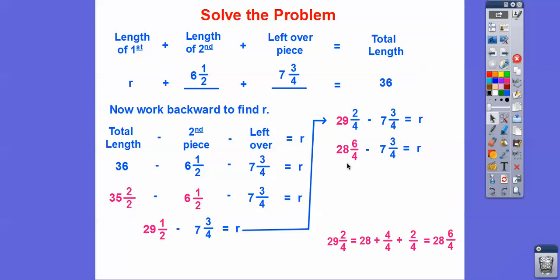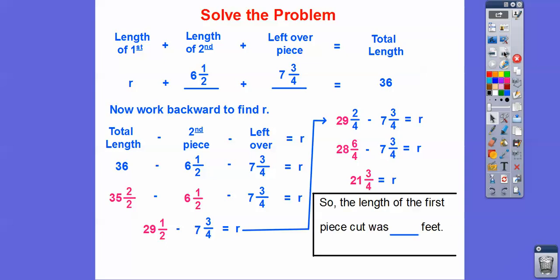So now we can subtract them now, so 6 over 4 minus 3 over 4 is 3 over 4, and 28 minus that 7 is 21, so 21 and 3 over 4. Always answer the question. So the length of the first piece cut is 21 and 3 fourths of a foot, 21 and 3 fourths feet.